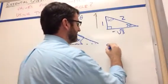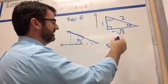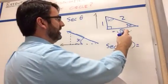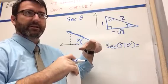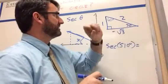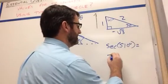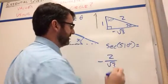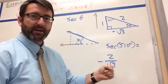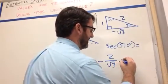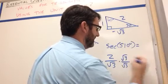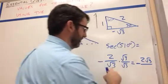Now we're trying to find the secant of 510 degrees. Remember, secant is the reciprocal of cosine. Cosine is adjacent over hypotenuse, so secant is hypotenuse over adjacent. That gives us negative two over the square root of 3. We want to rationalize the denominator, so we multiply by square root of 3 over square root of 3, leaving us with negative 2 square root of 3 over 3.